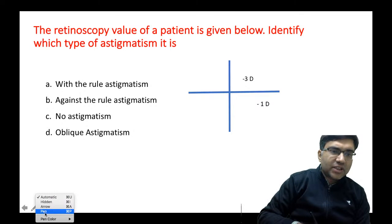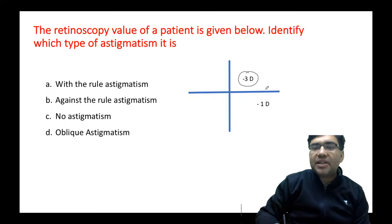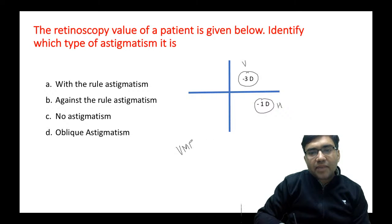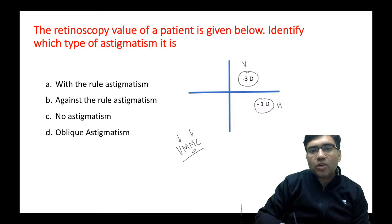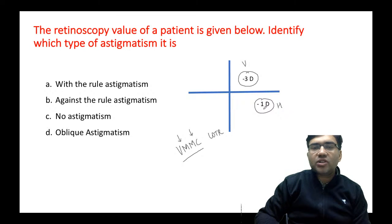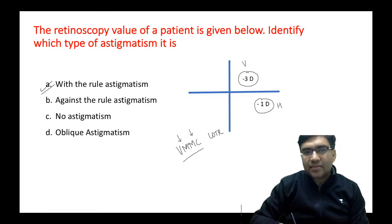Here is an example: the retinoscopy value of a patient shows minus 3 diopter in the vertical meridian and minus 1 diopter in the horizontal meridian. You can remember the mnemonic VMMC — Vertical Meridian More Curved — this is with-the-rule astigmatism. Because the vertical meridian is more myopic than the horizontal meridian, this is with-the-rule astigmatism.